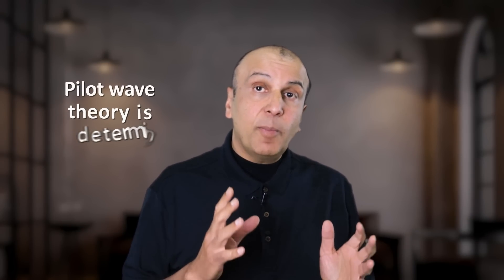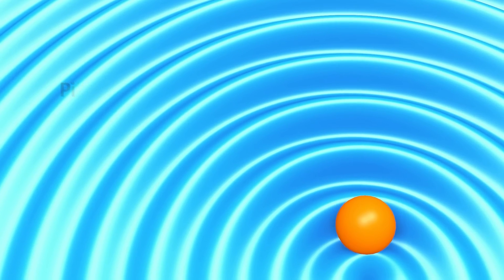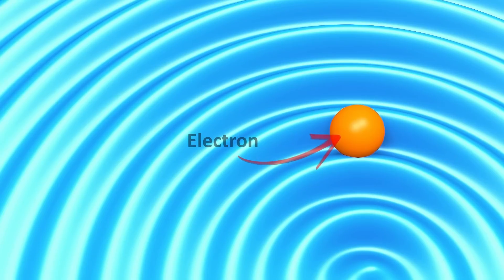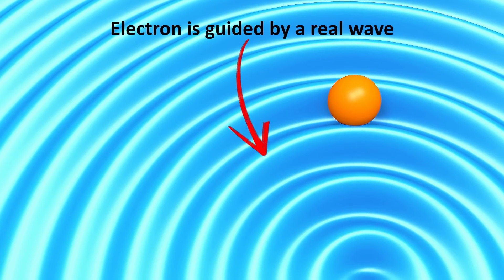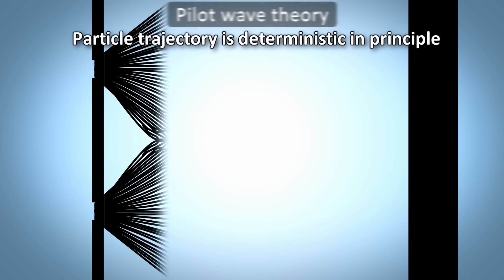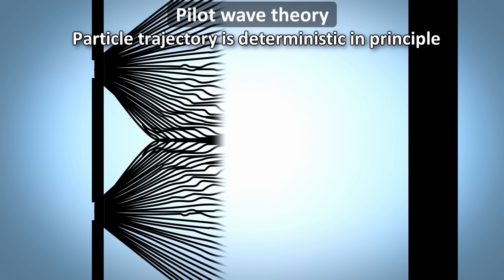But there are alternative interpretations of quantum mechanics that are deterministic. For example, the pilot wave theory, also known as Bohmian mechanics, is a deterministic theory. It postulates that the electron exists as a distinct real particle the whole time, and is guided by a real wave that tells the particle where to go. This wave evolves according to the Schrödinger equation, so the end results are identical to the Copenhagen interpretation. But unlike Copenhagen, it is in principle completely deterministic.